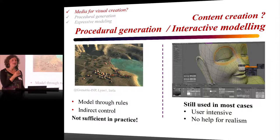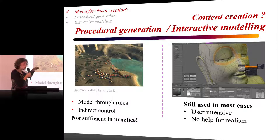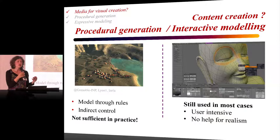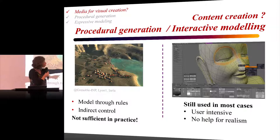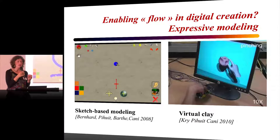All this is very nice, but it is not sufficient in practice — the problem remains how to create this content. We can model through rules but get only indirect control. If I want to model something precise — if I'm a film director doing Avatar and want to model natural scenes — pressing a button with rules will not be sufficient. In practice, specialized computer artists work for five years in specialized schools to learn complex modeling systems with lots of menus and buttons, and get no help for realism. So in my research, I try to enable creation using a kind of flow in digital creation — what I call expressive modeling.